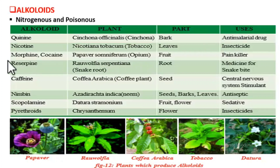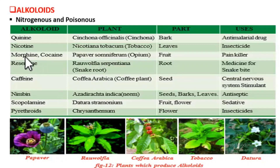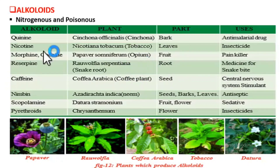Next is reserpine, obtained from the root of Rauvolfia serpentina, commonly called snake root. It is used in the treatment of snakebite. Then caffeine, obtained from the seeds of Coffea arabica — the coffee plant. Caffeine is a stimulant that stimulates our brain and central nervous system, which is why we feel active after drinking coffee.